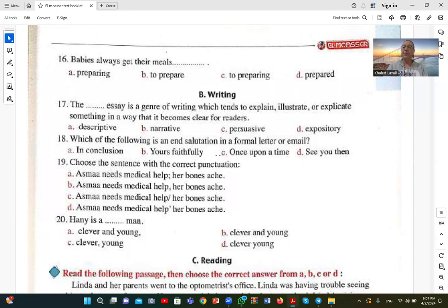Number seventeen: The essay is a genre of writing which tends to explain, illustrate, or explicate something in a way that it becomes clear for the readers. So expository, which comes from 'expose' meaning to clarify or explain, is a type of writing that clarifies and explains things for the reader. So D, expository, is the correct answer.